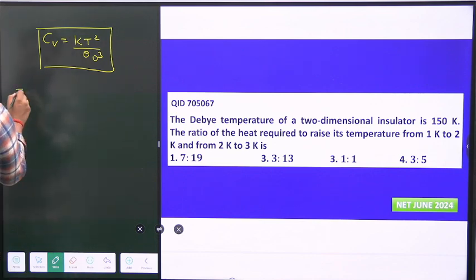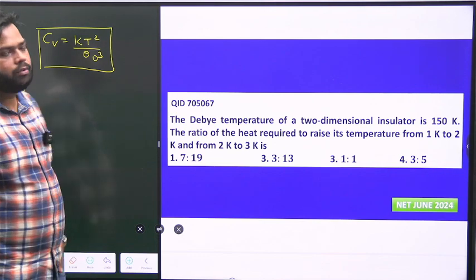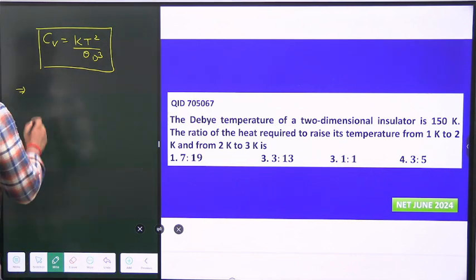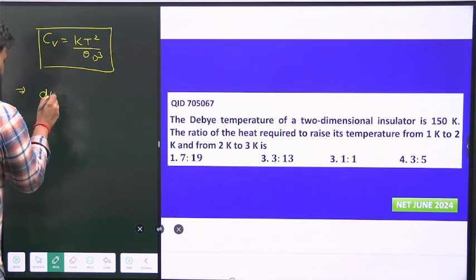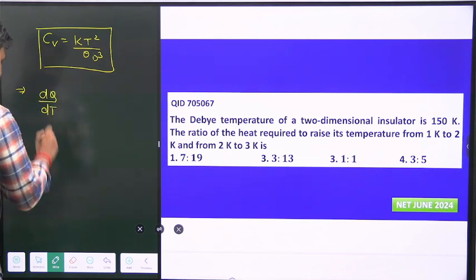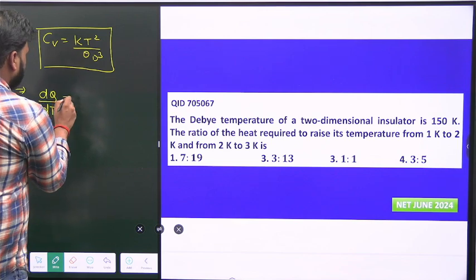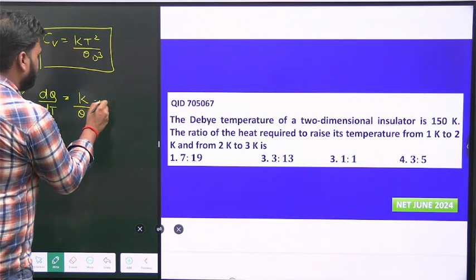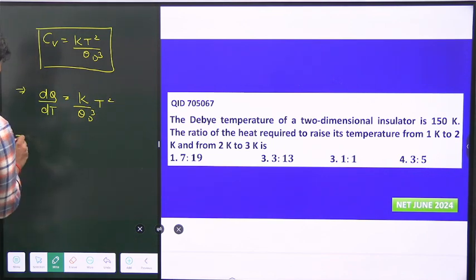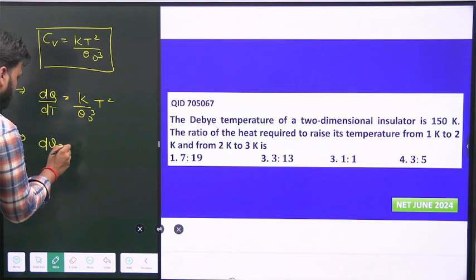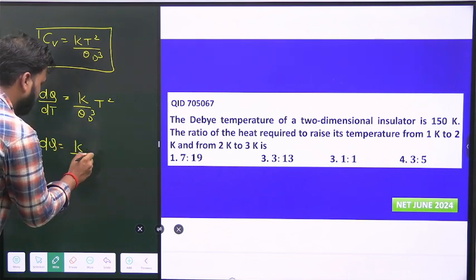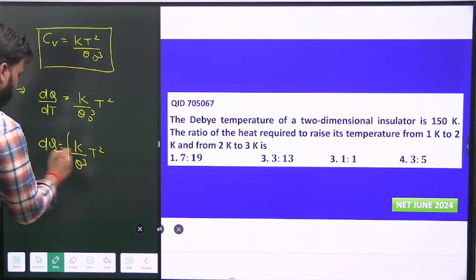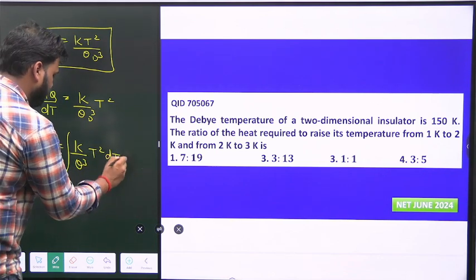We have to find the heat required. Specific heat C_v equals dQ/dT, which equals K over theta_D cubed times T squared. We can write dQ equals K over theta_D cubed times T squared dT, and integrate both sides.